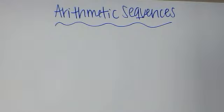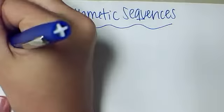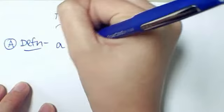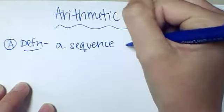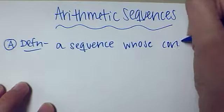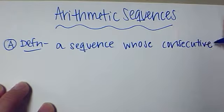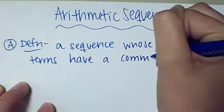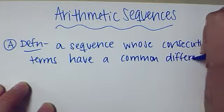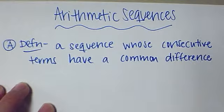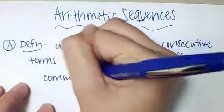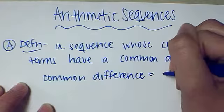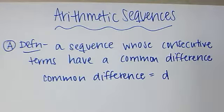Our next section of notes is about arithmetic sequences. For part A, I'm going to give you a definition of an arithmetic sequence, and that is a sequence whose consecutive terms have a common difference, and that common difference is D. So that's a special label that we have for that, it's always D.